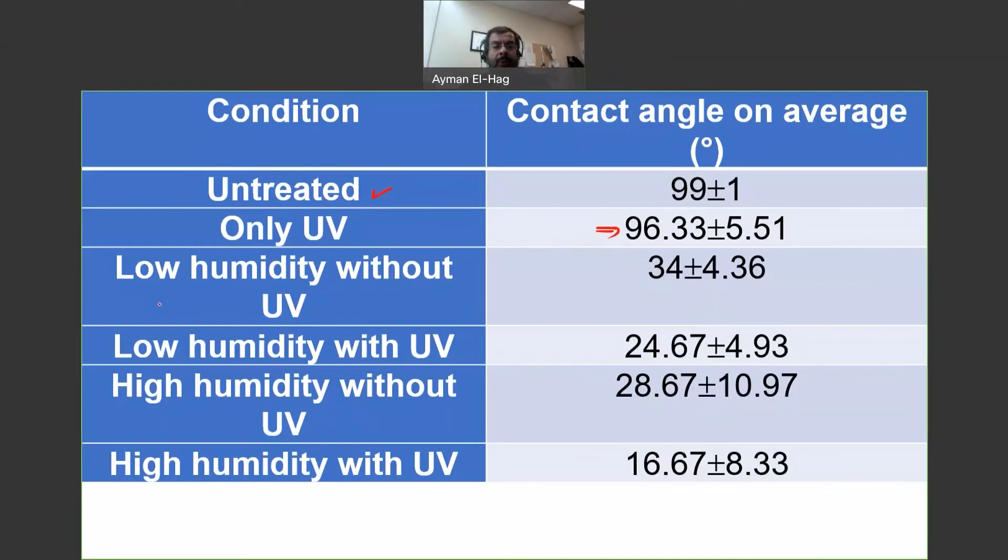Then once we start to apply the high voltage electrodes, we have humidity with or without UV, then you will start to see a decline, huge decline in the contact angle because the material surface becomes very hydrophilic. And of course the highest drop in the contact angle was when we have both the high humidity and the UV.